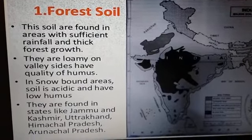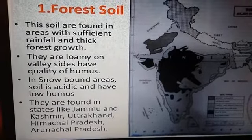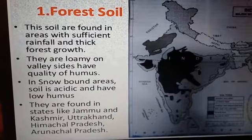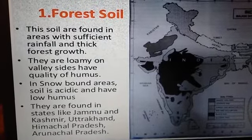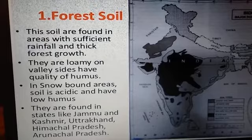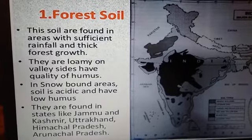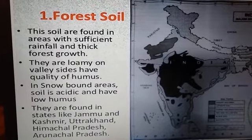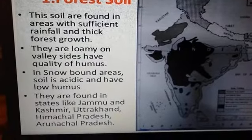In snow-bound areas, the soil is acidic and loamy. In those areas where there is a jungle with snow, the soil is acidic, with less acid content and less humus content.